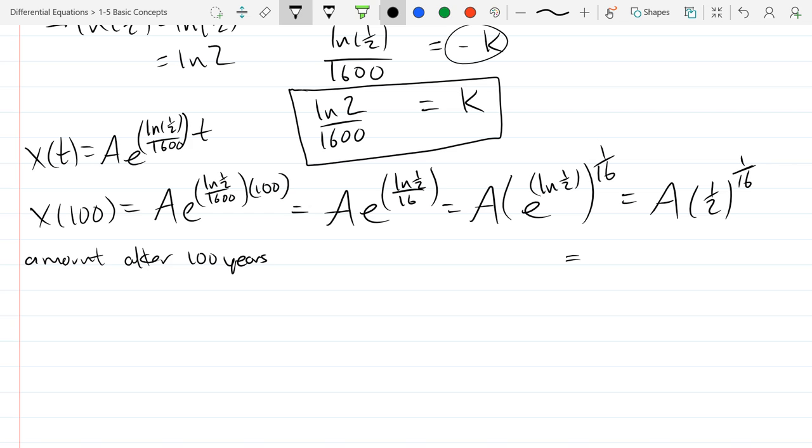Anybody have a handy calculator on their phone? We can get some decimal. I imagine it's probably .9 something. .957. And that's the approximation? Or is that the exact? It must be the approximation. All right. So this is the amount after 100 years. So you have about 95% of what you started with.